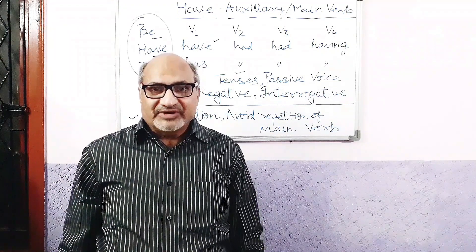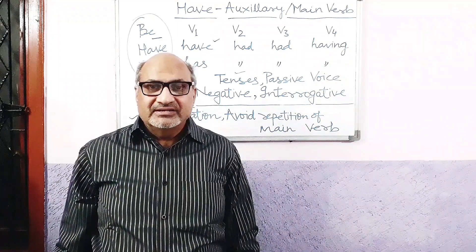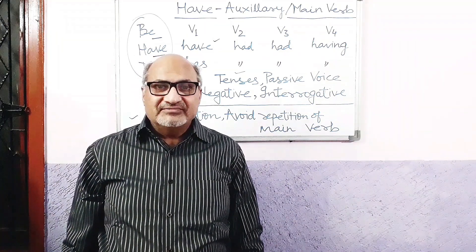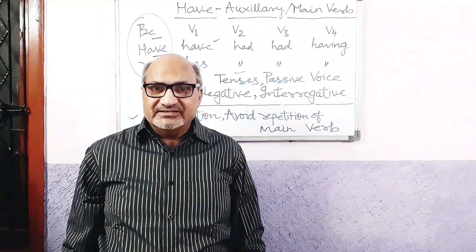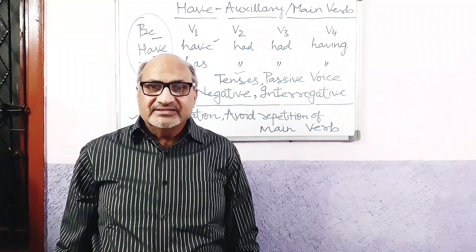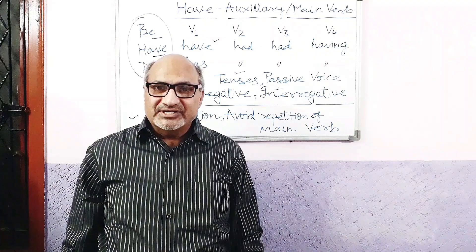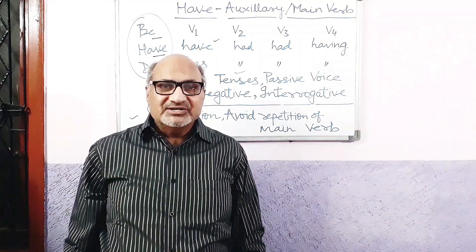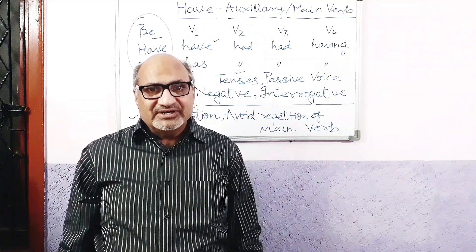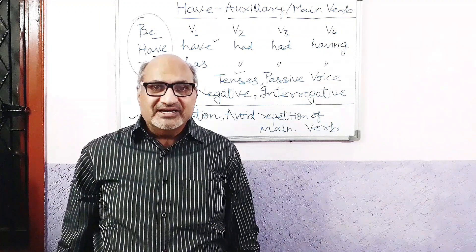Present perfect examples: 'They have written a letter.' 'They haven't written a letter.' 'Have they written a letter?' 'Haven't they written a letter?' These sentences are affirmative, negative, interrogative, and interrogative-negative constructions respectively.